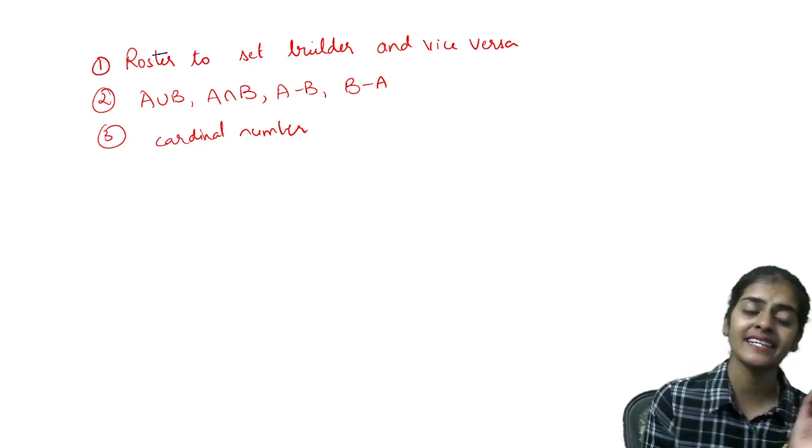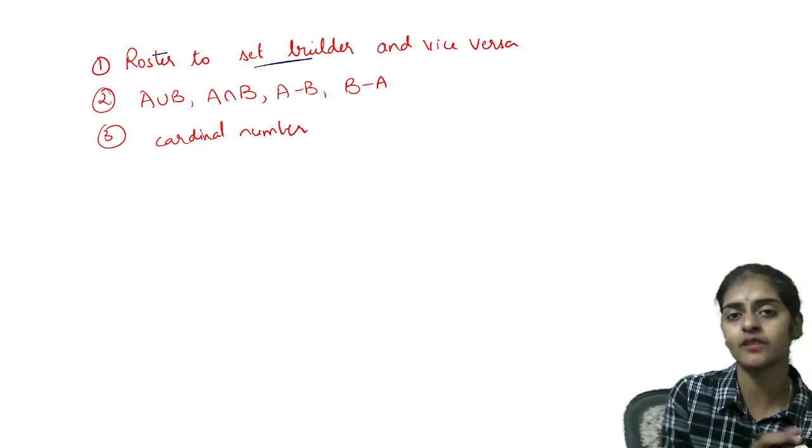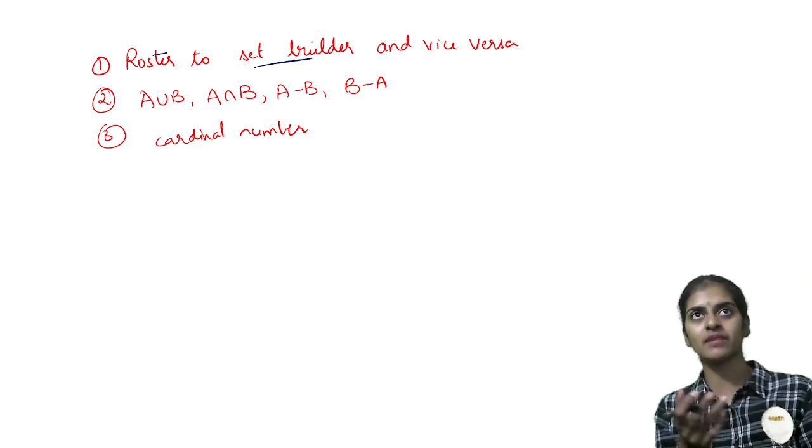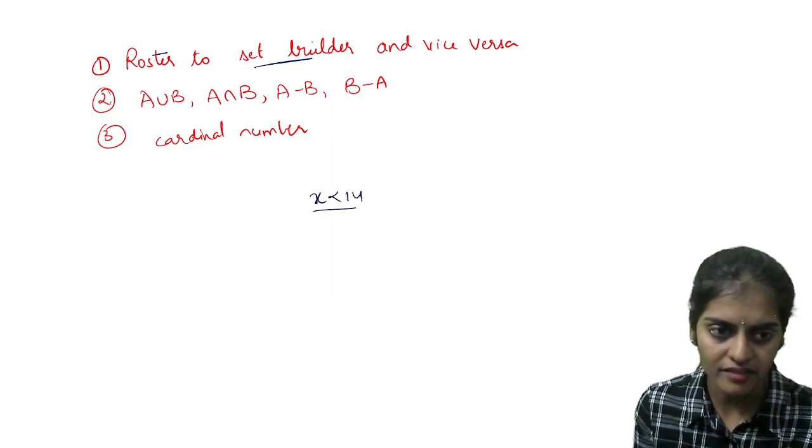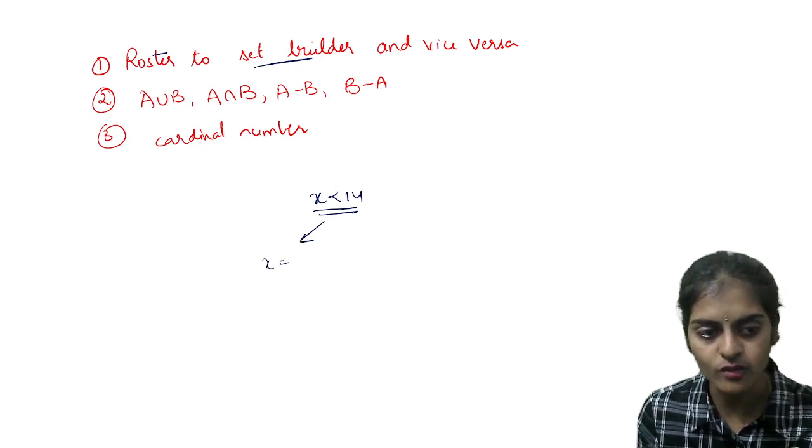So very important and here I find that many students still don't know what is the actual meaning of set builder form. Suppose if I write x less than 14, which means I should stop the value of x only at 13.